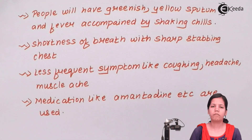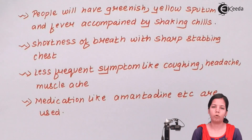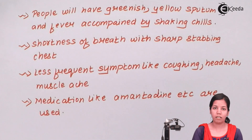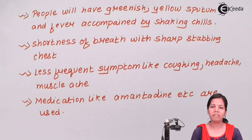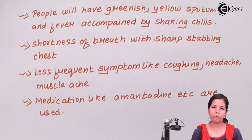In this part of the chapter, what we came across was pneumonia — how it affects young children and how it affects adults in different fashions and manners. I hope you are clear with this concept of pneumonia. Thank you.